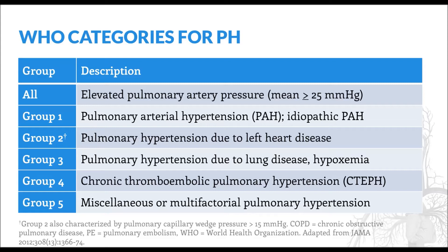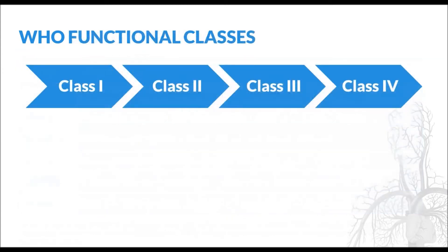Group 3 are those with pulmonary hypertension due to chronic lung diseases, and Group 4 represents those with chronic thromboembolic pulmonary hypertension, or CTEPH. Group 5 is a category that represents miscellaneous etiologies, or those where a single cause is difficult to determine.